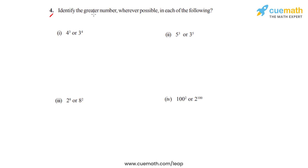Question number 4 says to identify the greater number wherever possible in each of the following cases. We have got 5 bits in this question but we have taken the first 4 bits first. So we have 4 raised to 3 or 3 raised to 4, and we have to compare these two numbers and tell which is greater. We will have to expand them.